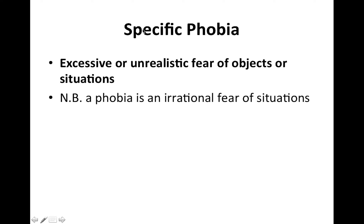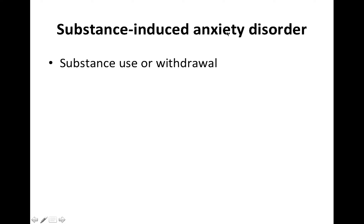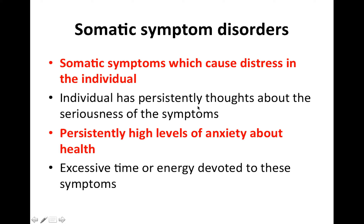A specific phobia is an excessive or unrealistic fear of objects or situations. Social anxiety disorder is a fear of being embarrassed and negatively evaluated by others. Substance-induced anxiety disorder occurs with substance use or withdrawal. Somatic symptom disorder involves somatic symptoms which cause distress — for example, the patient has abdominal pain, persistently thinks about the seriousness of symptoms, has anxiety about their own health, and devotes a lot of time and energy to these symptoms.